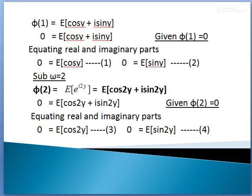So after splitting real and imaginary parts for ω = 2: E[cos(2Y)] = 0 is the third equation, and E[sin(2Y)] = 0 is the fourth equation.